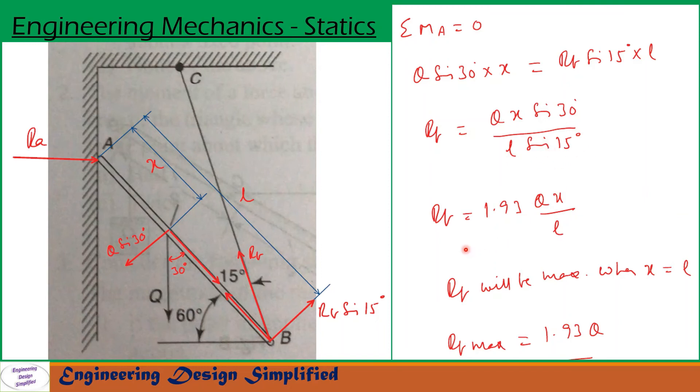So after simplification we get RB equal to 1.93 Q into x by L. So x is a distance from A to the point of application of Q and L is the total length. So RB that is a tension in this cable S will be maximum when x equal to L. So the maximum value of the tension in the cable S that is also equal to RB max equal to 1.93 into Q.